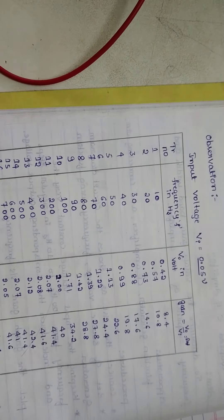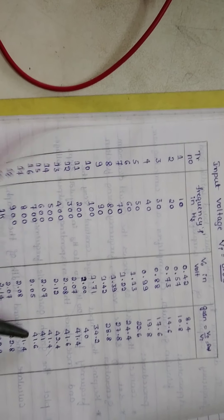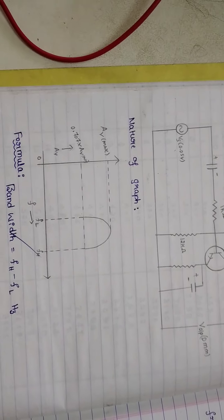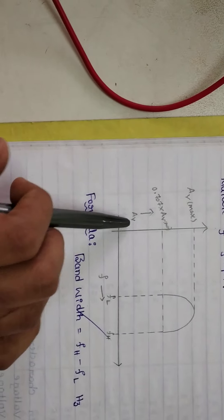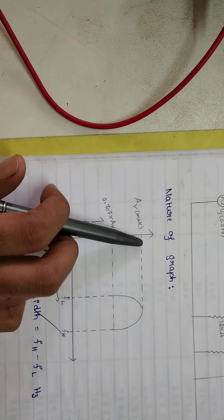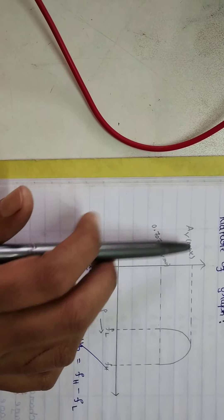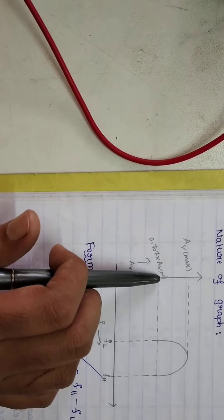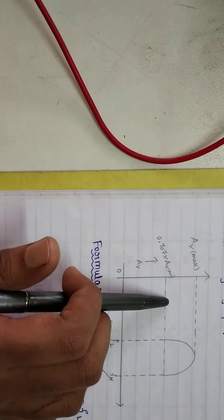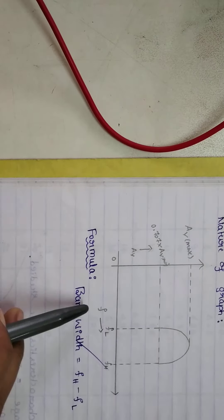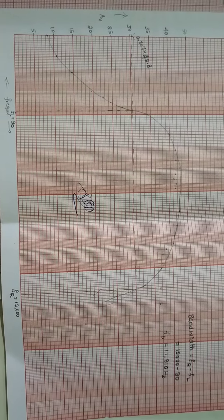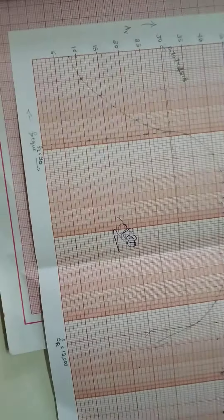Draw a graph of voltage gain versus frequency range, with frequency along the x-axis and voltage gain along the y-axis. In this experiment we use a semi-log graph. Identify the maximum voltage gain AV-maximum on the graph, multiply it by 0.707 to get one particular value, note down that value, and draw the corresponding horizontal line that will cut the curve.